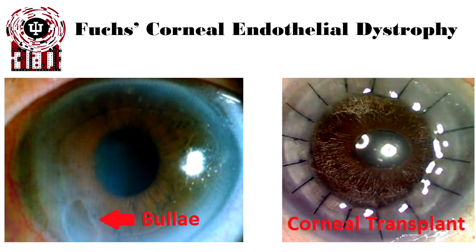Ultimately, this corneal swelling leads to blisters of the epithelium called bullae, which can be painful. It also leads to dry eye, which must be managed using artificial tears and other methods. When the bullae break, antibiotics should be considered to prevent infection. All of this ultimately causes scarring and permanent swelling of the cornea, which permanently blocks vision. At that point, corneal transplants of various types need to be considered.